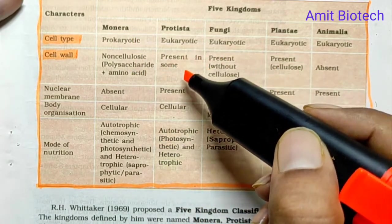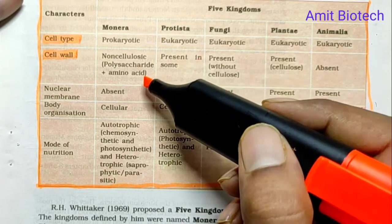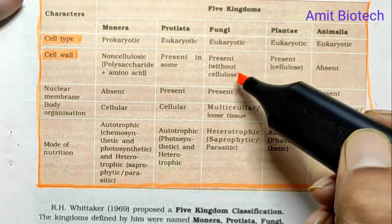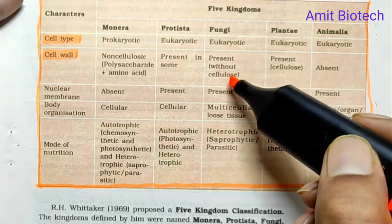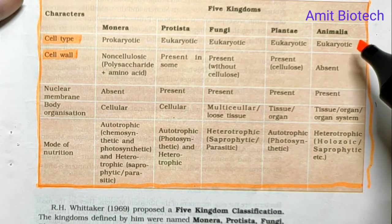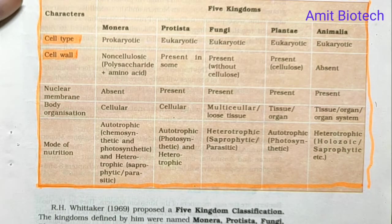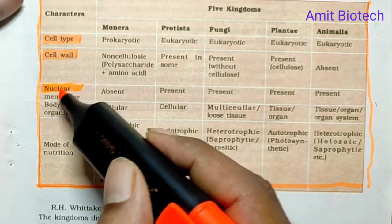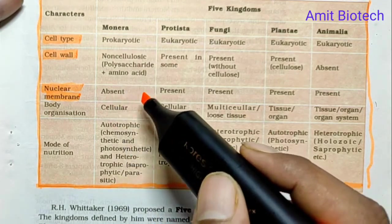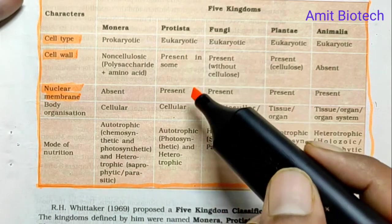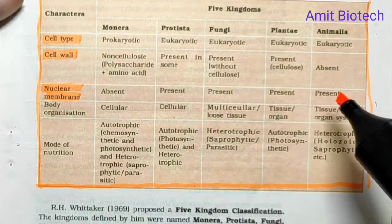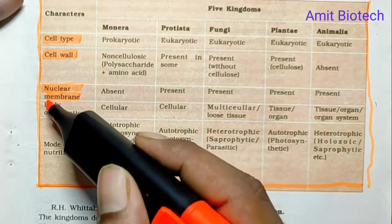Regarding cell wall composition: Fungi have a cell wall but it lacks cellulose — the cell wall in fungi is made of chitin. In Plantae, cellulose is present in the cell wall. In Animalia, the cell membrane is present but there is no cell wall. In Kingdom Monera, being prokaryotes, there is no nuclear membrane.